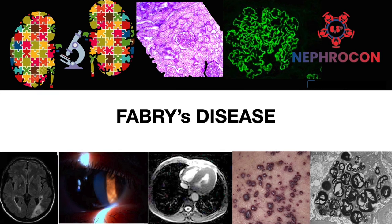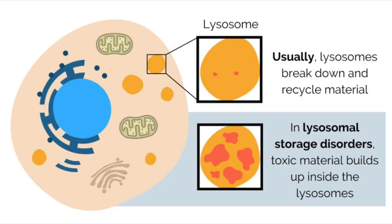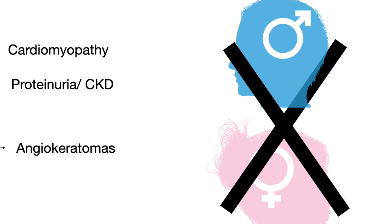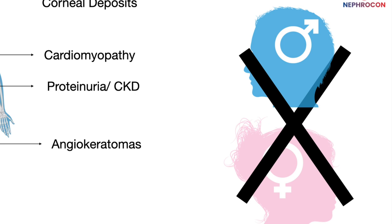In 1898, William Anderson and Johannes Fabry described Fabry's disease. It is a lysosomal storage disorder that leads to excessive deposition of neutral glycosphingolipids in the vascular endothelium of multiple organs. It is an X-linked disorder manifesting predominantly in men; however, female heterozygotes may also be affected.